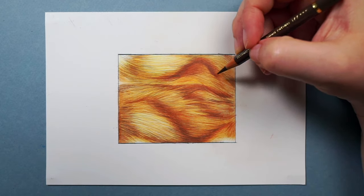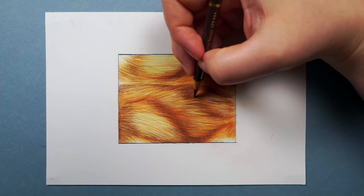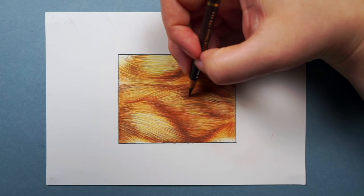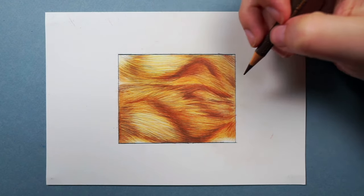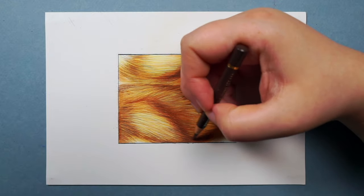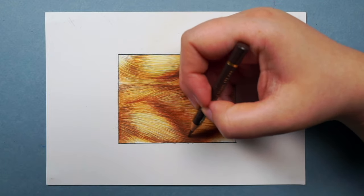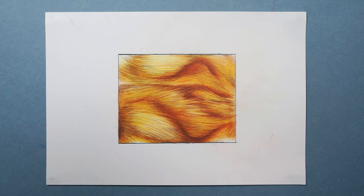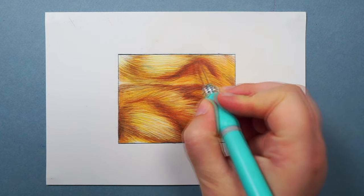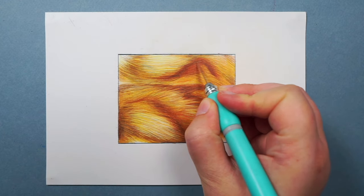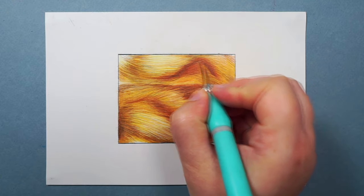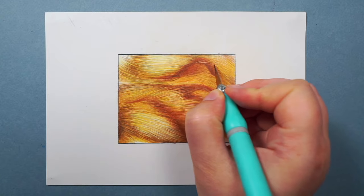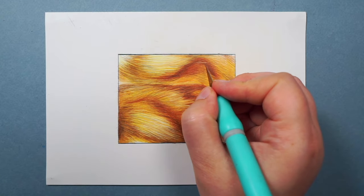So once I'm generally happy with how the fur is looking what I then want to do is add some of the lightest hairs back in. So generally where I'm building up all of these layers some of the really light hairs and light patches of fur get a bit lost. So what I like to do is take a tool called a craft knife and just so so gently scrape away some of the layers of pencil and this reveals the pencil that I put down right at the very beginning, that very light yellow.